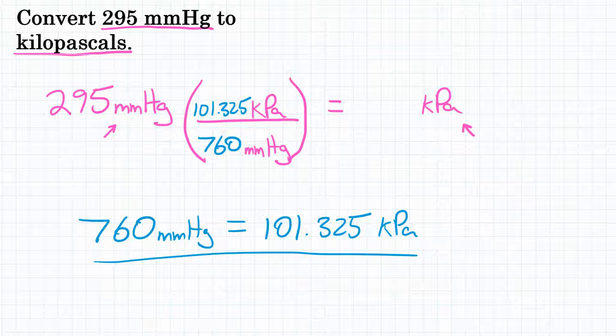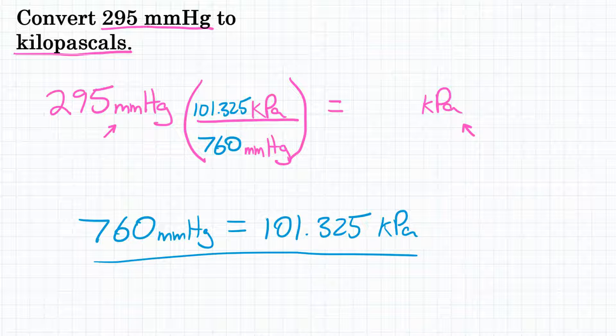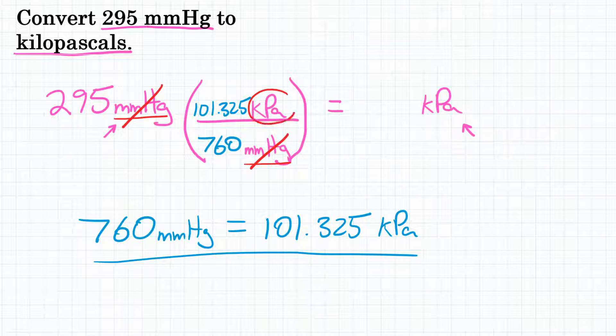Before we solve, let's look at our units. We have millimeters of mercury up here to start, and we have it in the bottom of our conversion factor. So that means they will cancel out, and we will be left with kPa, which is the unit we want.